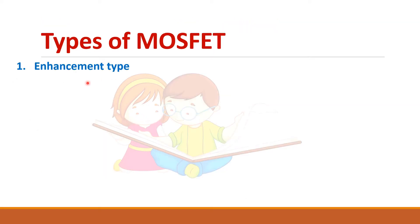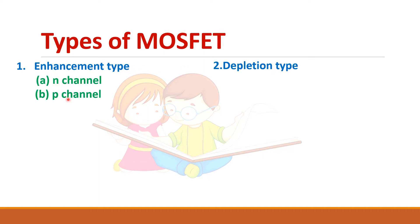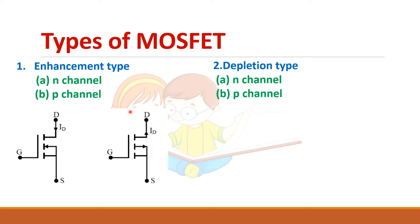There are two types of MOSFET, namely enhancement type and depletion type. In that you have N channel and P channel depending upon the type of semiconductor material used. This is an N channel MOSFET and this is a P channel one. You can see that the gate terminal in a MOSFET will be insulated from the rest of the device, so there will be a gap here.